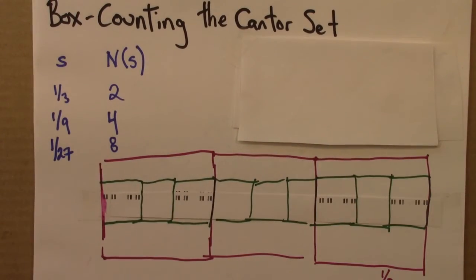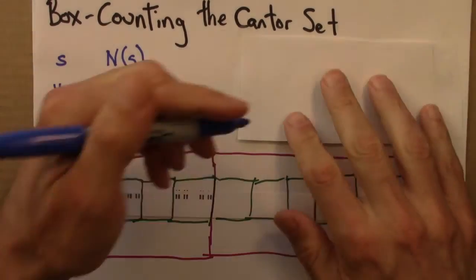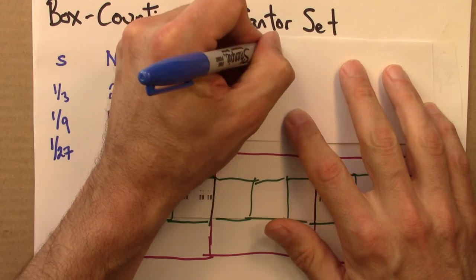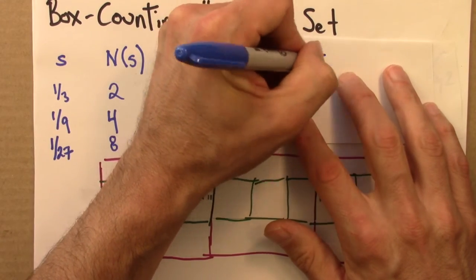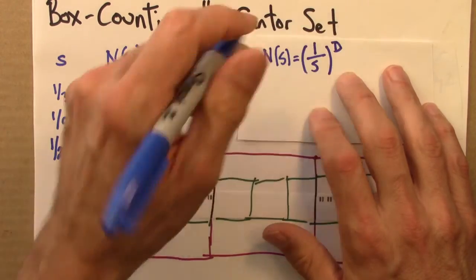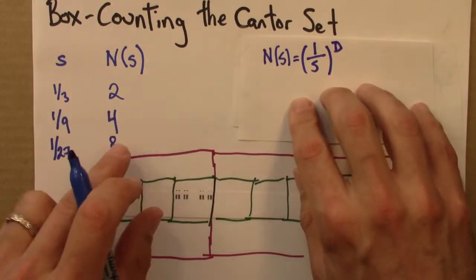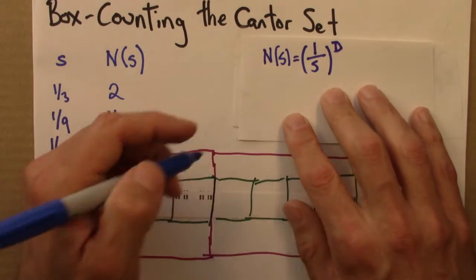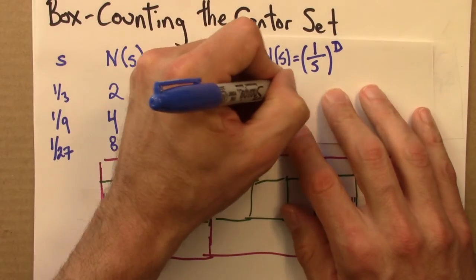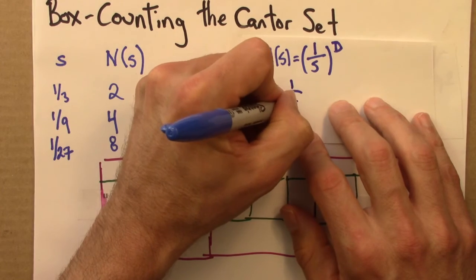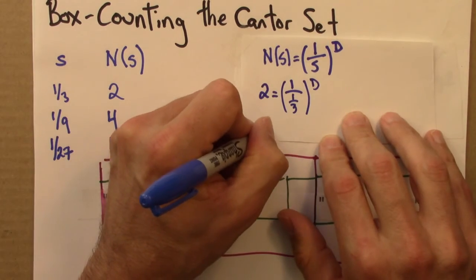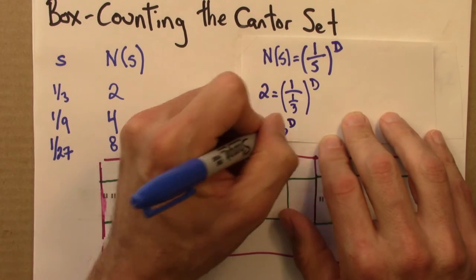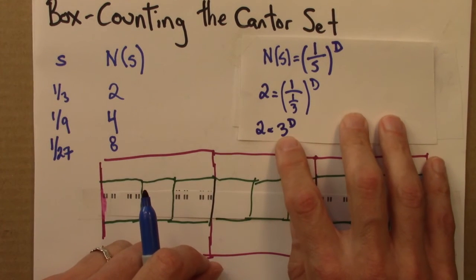So let's use this data to calculate the dimension, the box counting dimension. And that's given by this relationship. And we want to know D. So let's plug in maybe this first row. Two is one over a third to the D. Which simplifies to two equals three to the D.